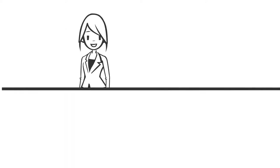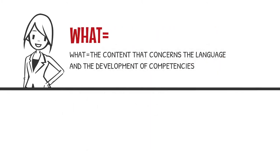Contextualized ESL intentions represent what students will need linguistically to better navigate the world at their age. The 'what' represents the content that concerns the language and the development of competencies — like the functional language needed to interrupt politely during an interaction, for example.